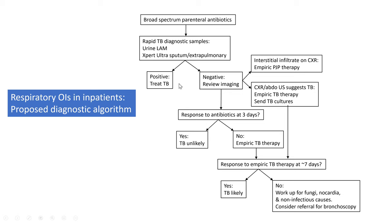If the rapid tests are positive, you've got TB. If negative, that's when you look at the imaging. If the chest x-ray looks like pneumocystis, the chances are very high that it is, and you should treat it. If the chest x-ray or ultrasound suggest TB, send off sputum for TB cultures and start TB therapy. If the x-ray doesn't suggest TB and the patient has responded to antibiotics, they probably had a bacterial infection and you can aim for discharge. If not, you're probably starting empiric TB therapy and looking for a response within about five to seven days.